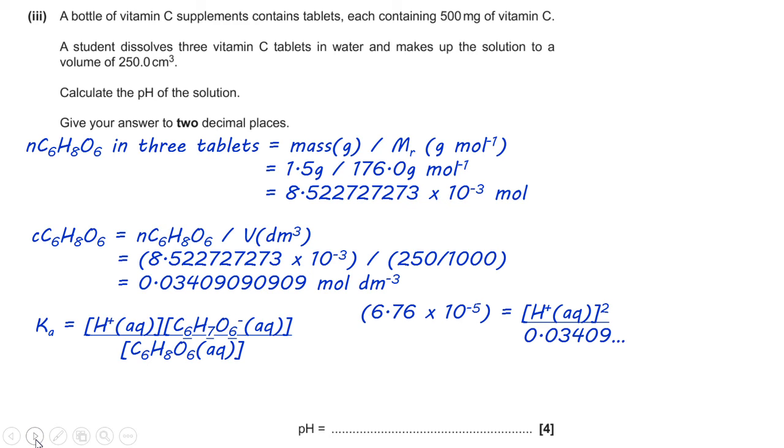So, remembering that the monobasic acid dissociates into H plus and the conjugate base, so these are equimolar. So, therefore, you can write H plus squared instead.